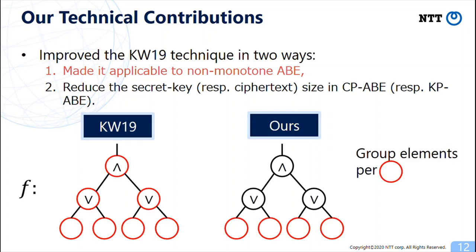In the original KW technique, when generating a secret key or ciphertext associated with the formula F, we need the same order of group elements as the number of all nodes of the formula F. We improve it so that we can construct ABE schemes where the order of group elements for the formula F corresponds to the number of leaf nodes of the formula F.